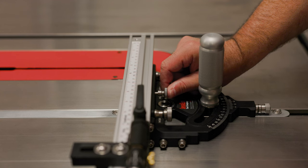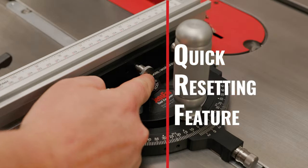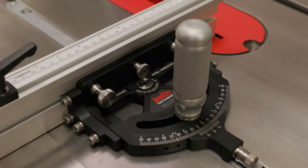Another patent pending feature on the MiterXL2 is the fence locating pin. This allows you to quickly reset your fence back to 0 degrees, without the hassle of realigning your fence to the blade every time.